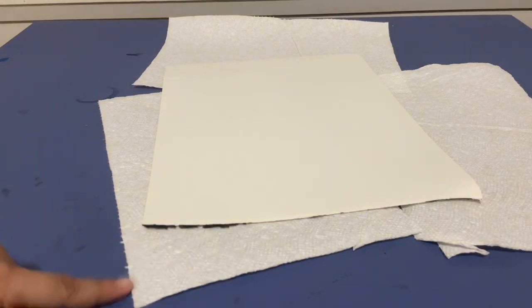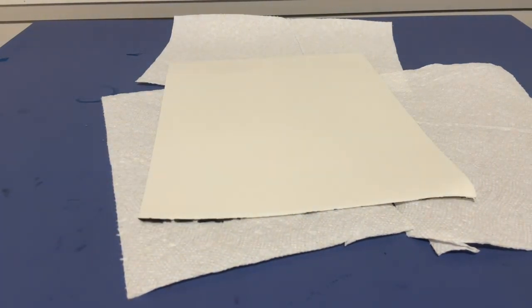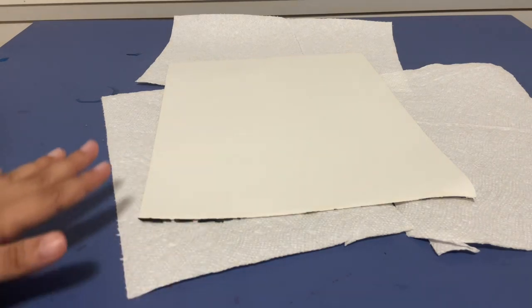Next step, you're gonna cover your surface and you're gonna place your paper in the middle. That's just so you get no paint on the table.